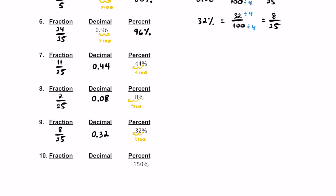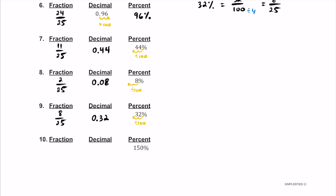Last one on this page — I'm going to do the decimal first. I'll find where the decimal is — it's at the end, and you don't see it. Let's divide by 100 and move that decimal twice to the left. If we do that, the decimal here is going to be 1.50. You can drop the zero though if you'd like to. So I'm going to write this as 1.5.